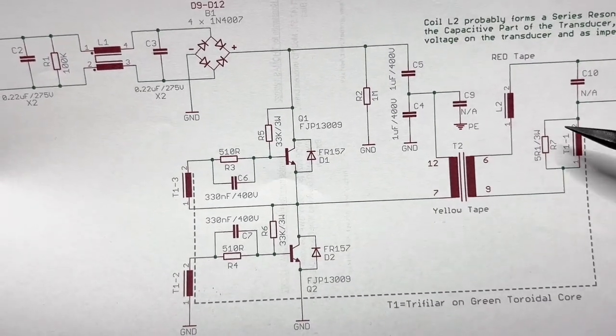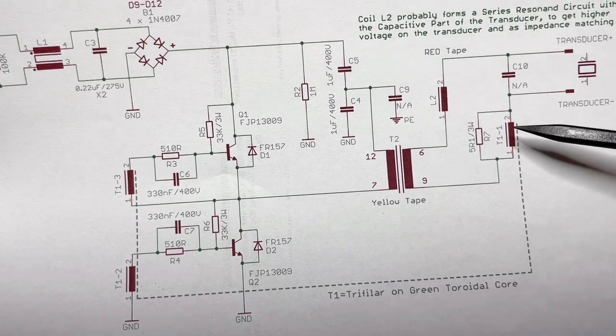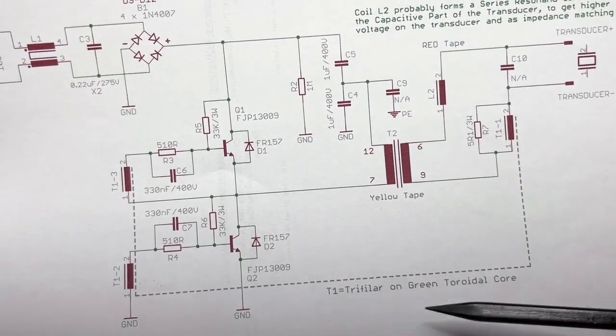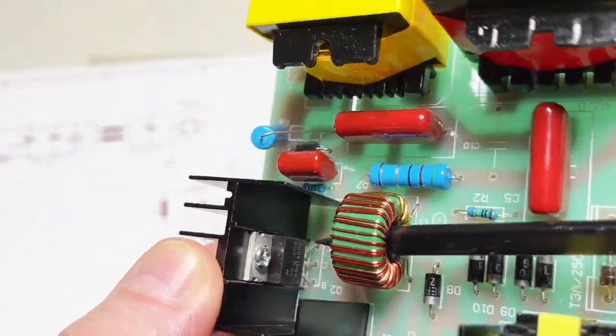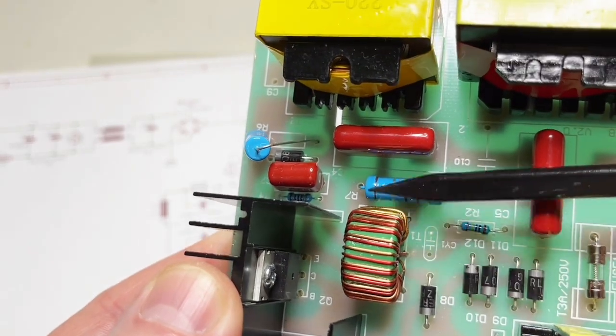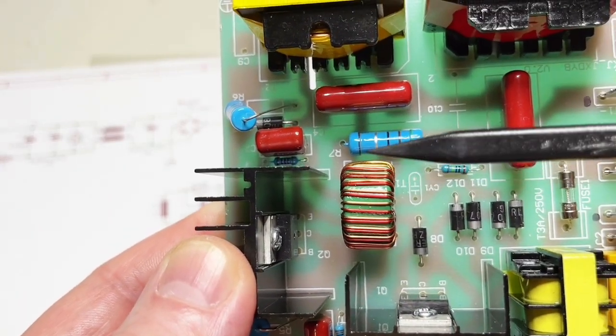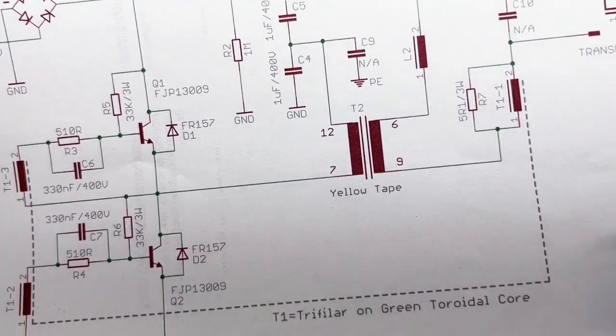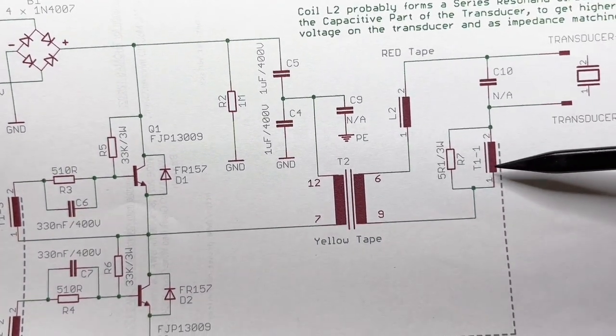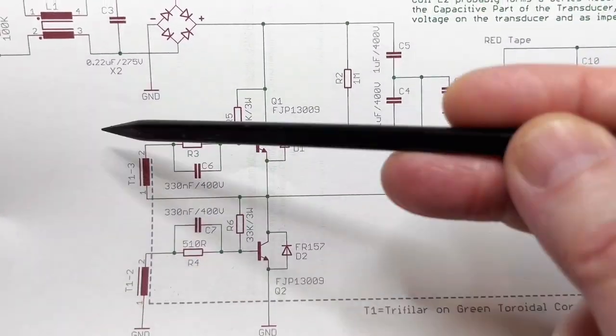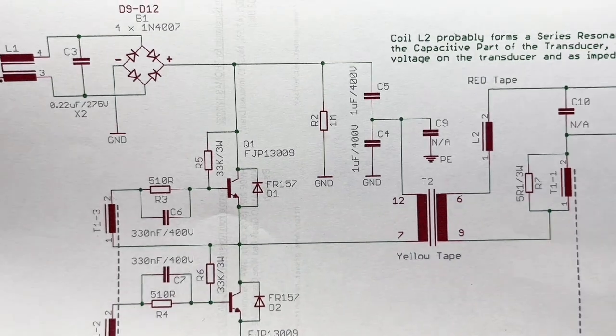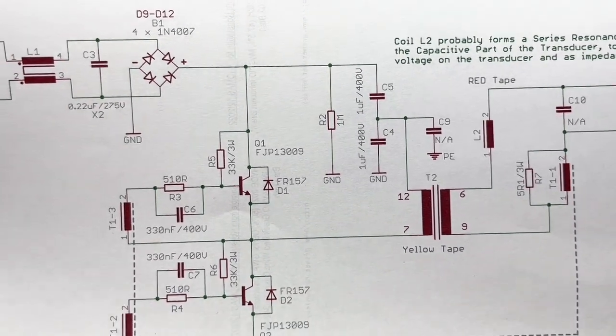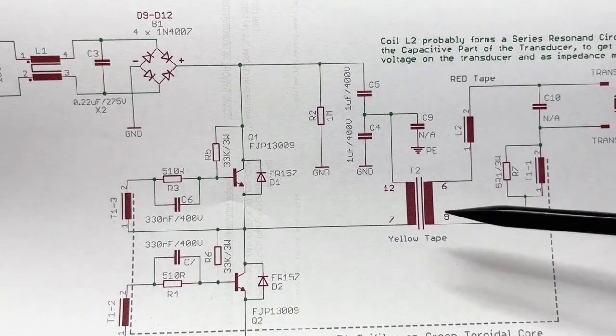The only difference is that this half bridge has no controller chip or anything behind it to switch the two transistors. It's self-oscillating. Here you have these three inductors which are in reality one transformer, a three winding transformer. It is connected to the output of the power oscillator and feeds back to the bases of the two transistors, so you have a self-oscillating half bridge.